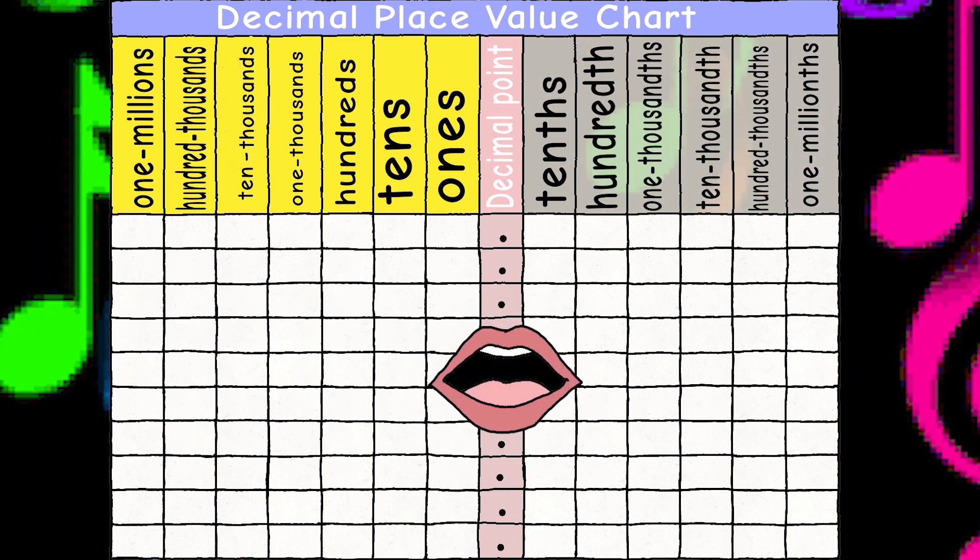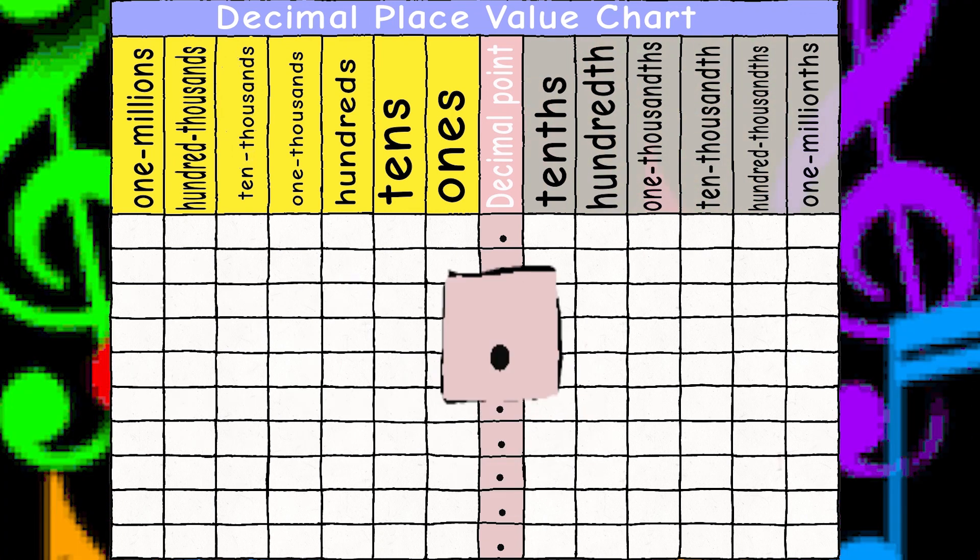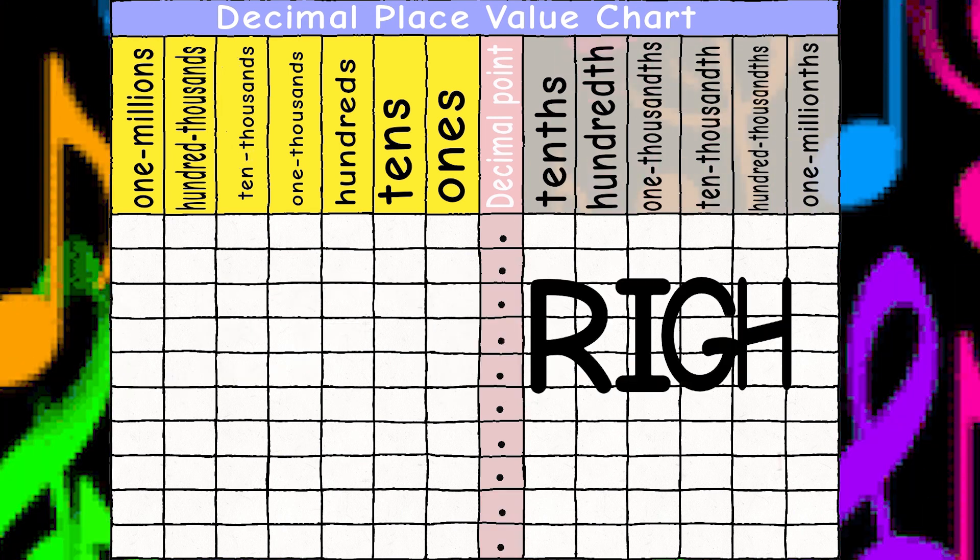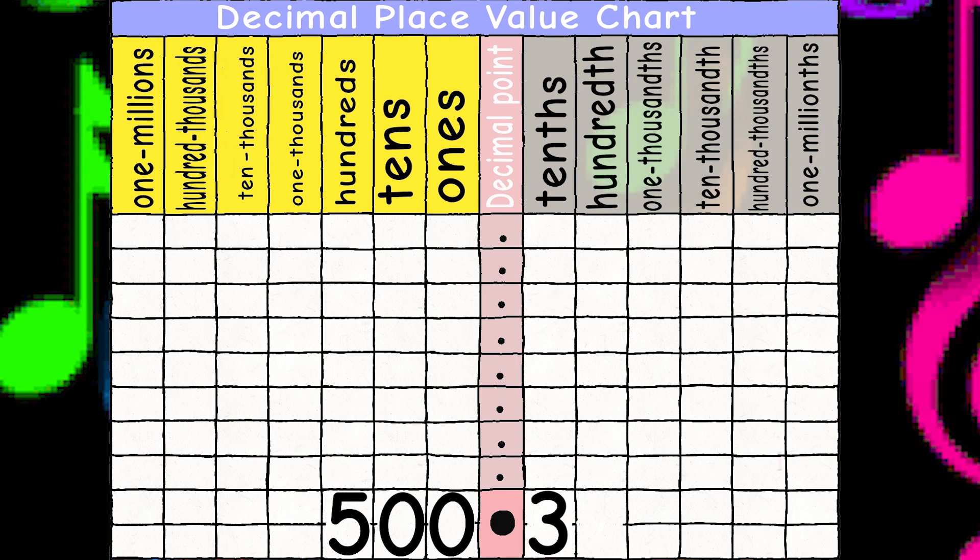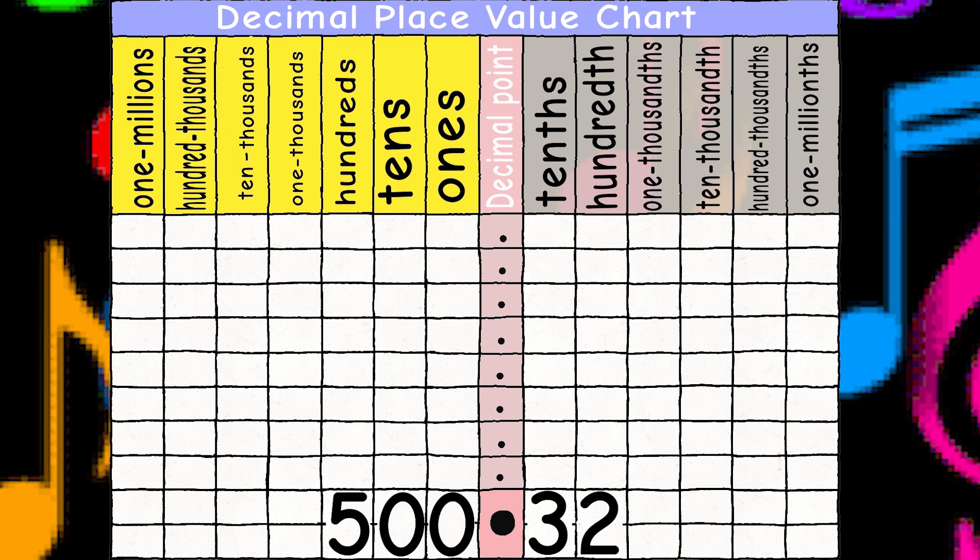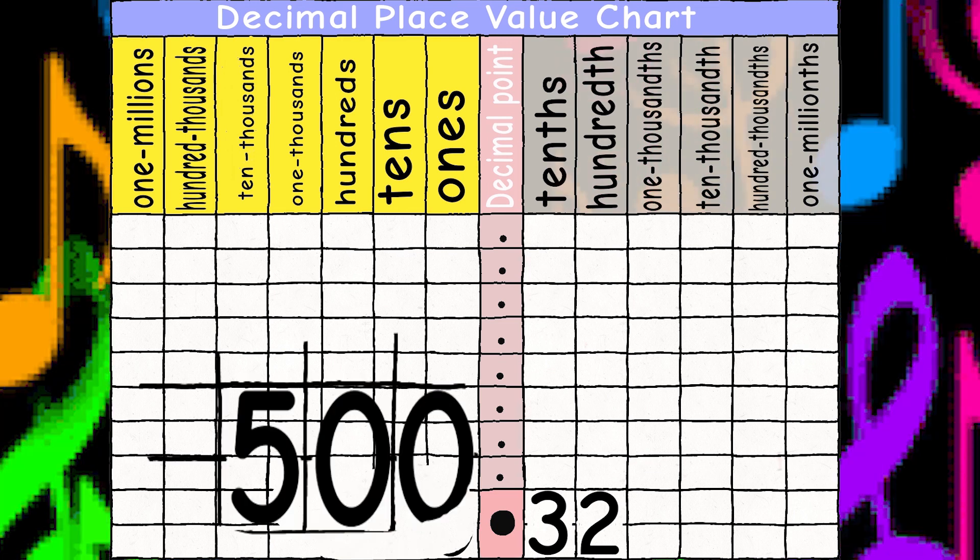Say we're given a number and not sure where it goes. Start with the decimal point and work high to low. You got numbers to the left and the right. Let's start with 500.32. We put 5 in the hundreds, zeros in the tens and ones. Now we're at the decimal so you're almost done. 500's on the left.